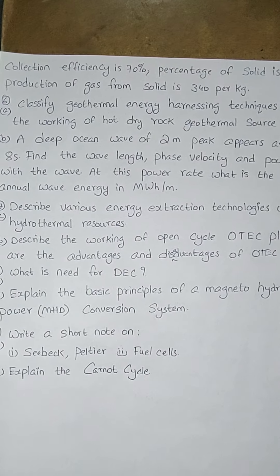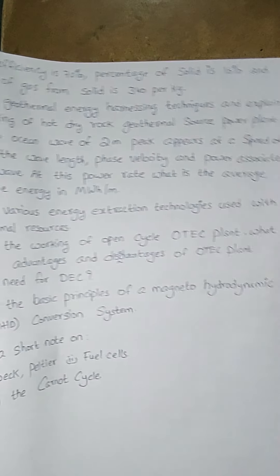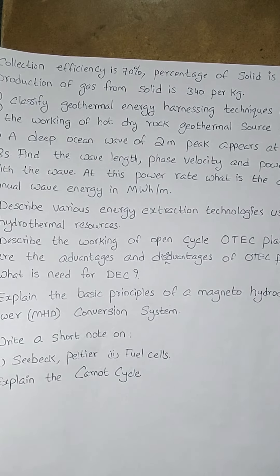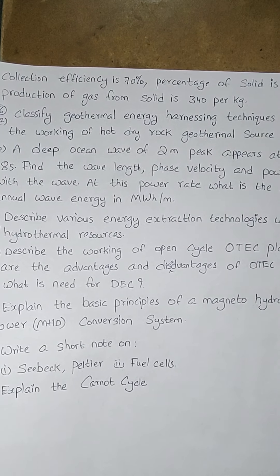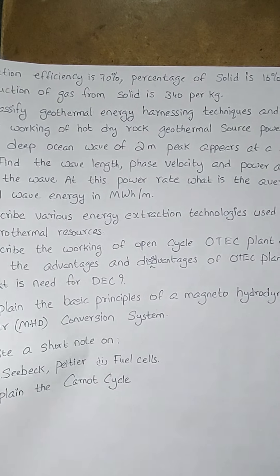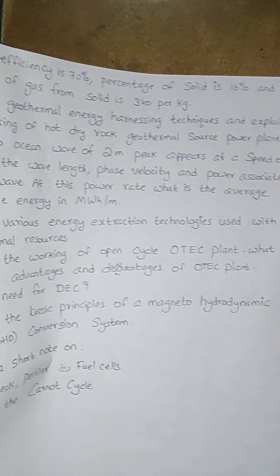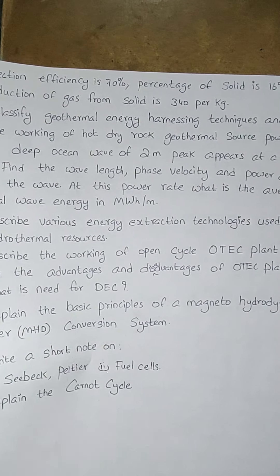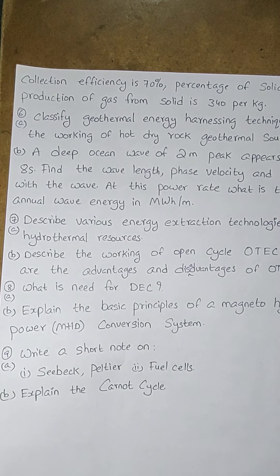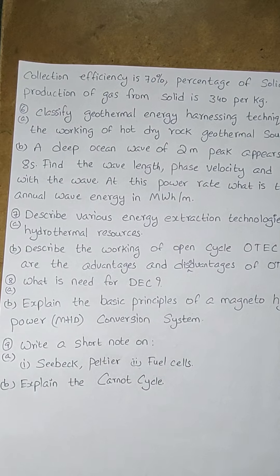Geothermal energy will also be covered. Sixth question: classify geothermal energy harnessing techniques and explain the working of a hot dry rock geothermal source power plant. Draw the diagram and explain all points under this topic. For part B, there is a problem: a deep ocean wave of 2 meter peak appears at a period of 8 seconds. Find the wavelength, phase velocity, and power associated with the wave, and calculate the average annual wave energy in MWh per meter. We will discuss these problems in upcoming classes.